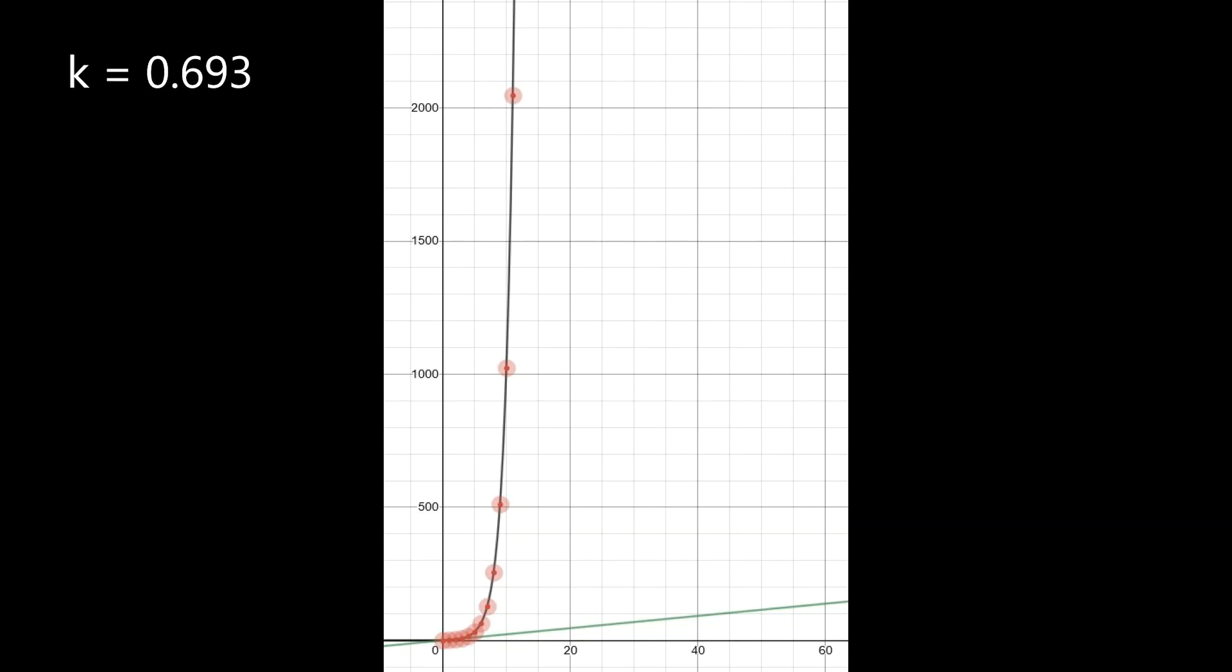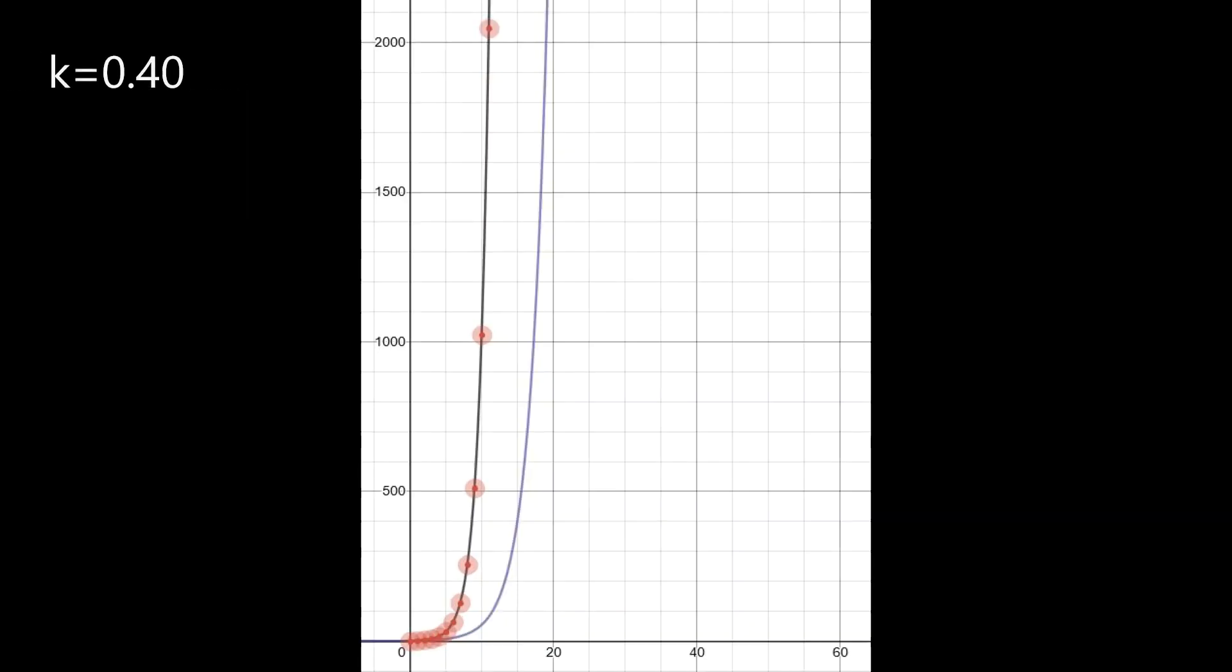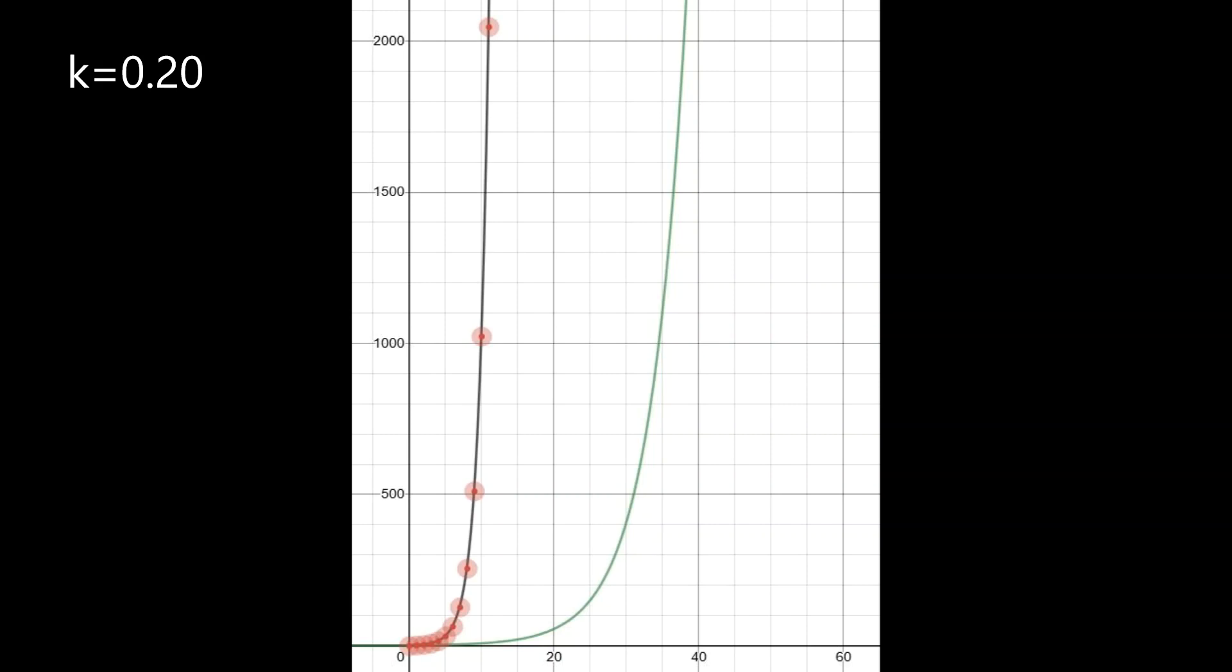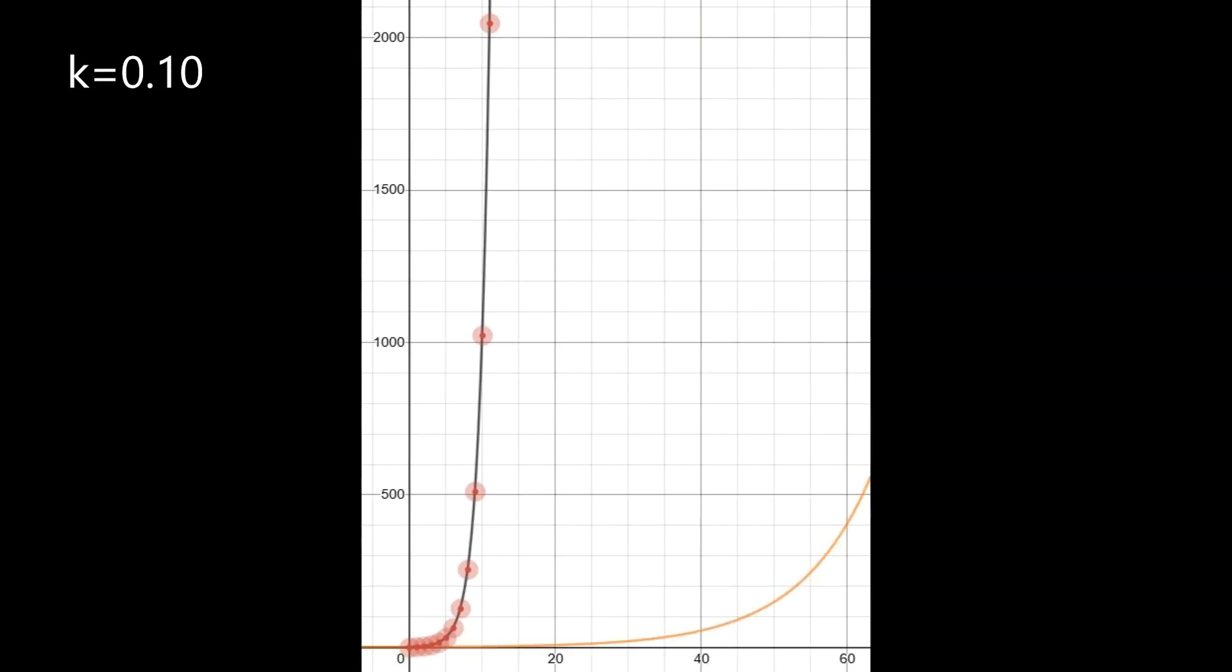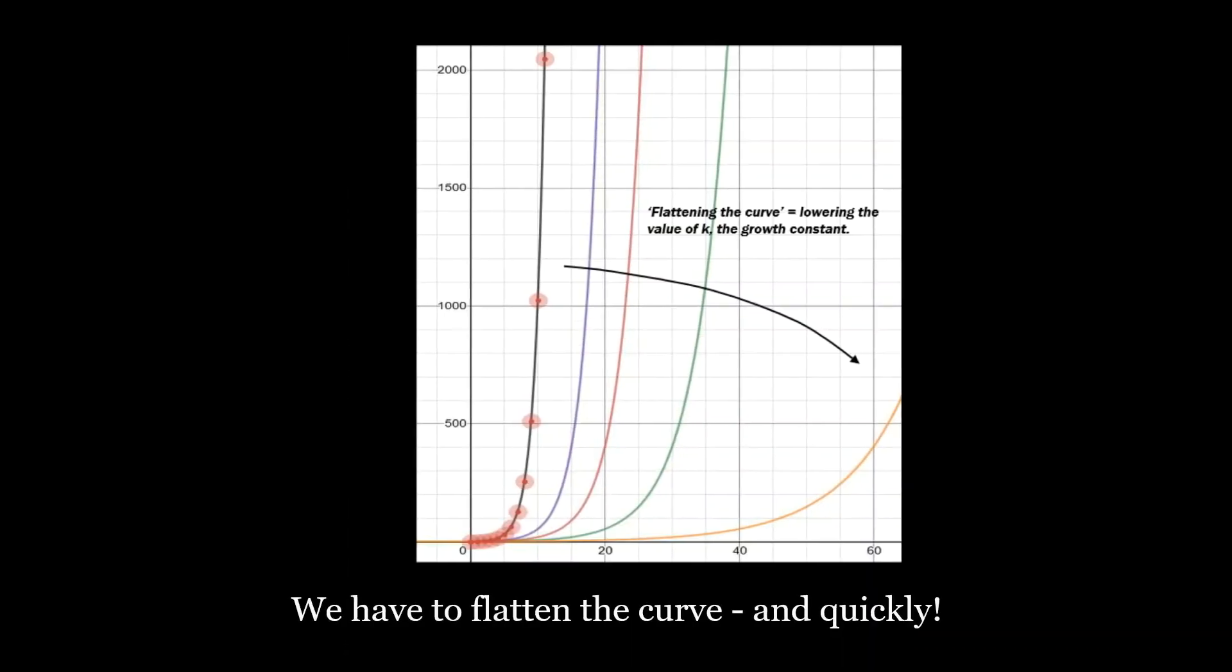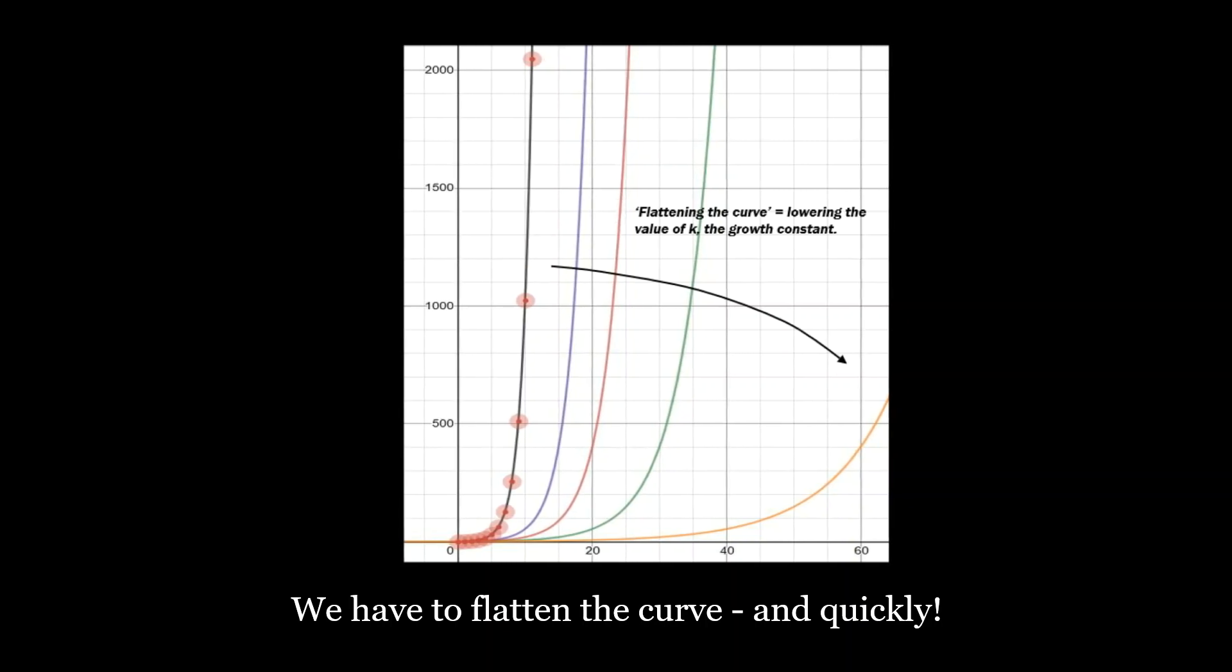Now, the original graph that we had for the chessboard, when you double every time you go from one square to the next, actually has a value of k of 0.693. But let me show you the curves as we decrease k through 0.40, 0.30, 0.20 and finally 0.10. You can see how quite small changes in the value of k reduce the growth rate quite quickly. They flatten the curve. That's what we've got to do with COVID-19.